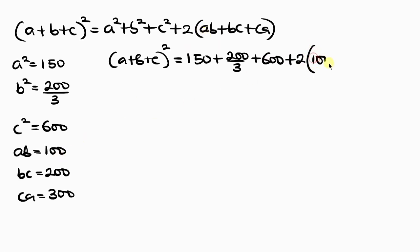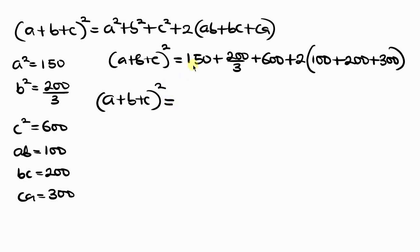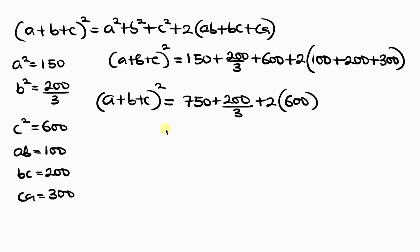Plus 2 times the quantity 100 plus 200 plus 300. Simplifying: 150 plus 600 is 750, plus 200 over 3. Inside the bracket, 100 plus 200 plus 300 equals 600, so we add 2 times 600 which is 1200. So (a+b+c)² equals 750 plus 1200 plus 200 over 3, which is 1950 plus 200 over 3.